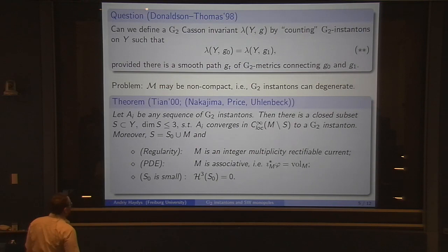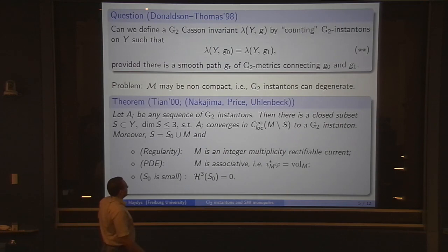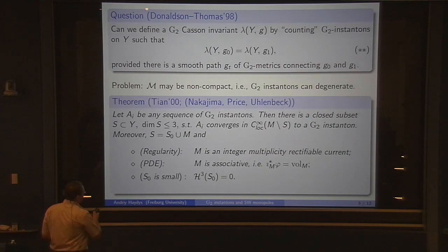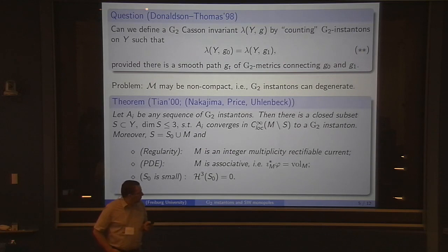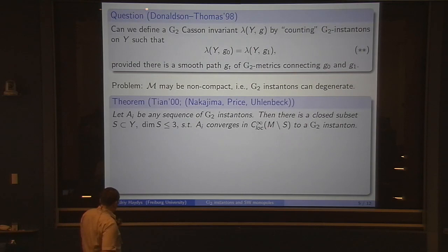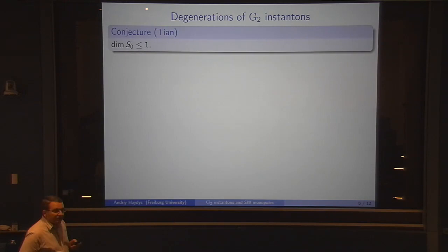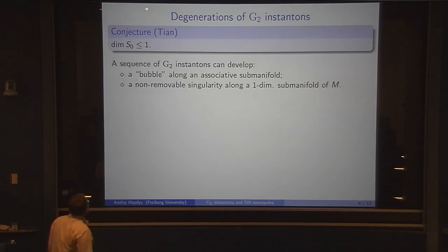What can we say about the set S which appears there? This consists of two bits, one is Z and the other one is M. We know a regularity statement for M: M is an integer multiplicity rectifiable current, M is also associative. That is, if you pull back phi, this is a volume on M, which is a PDE for M. A statement that Z is small, which in this case means that the Hausdorff measure is zero.